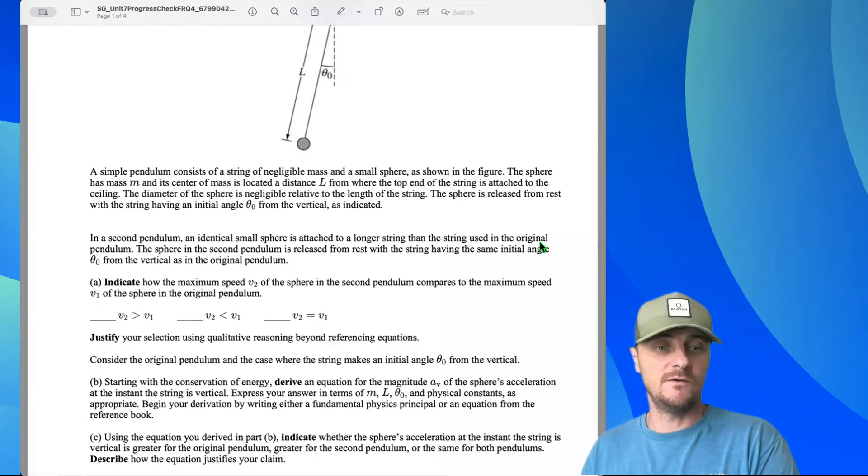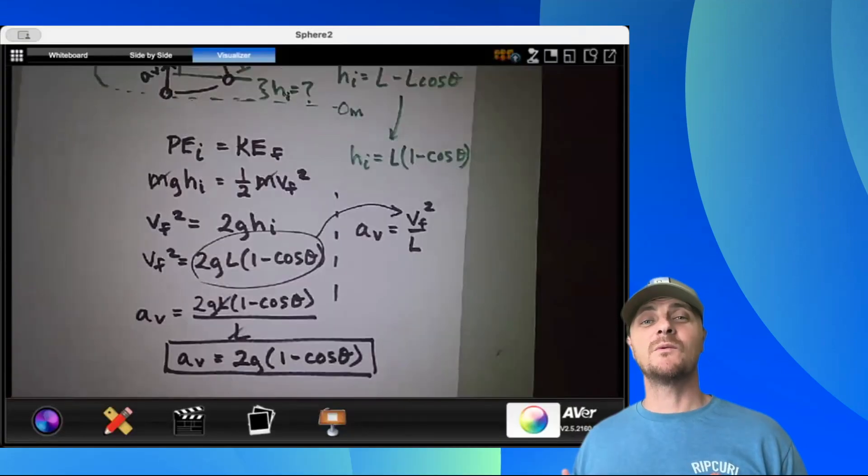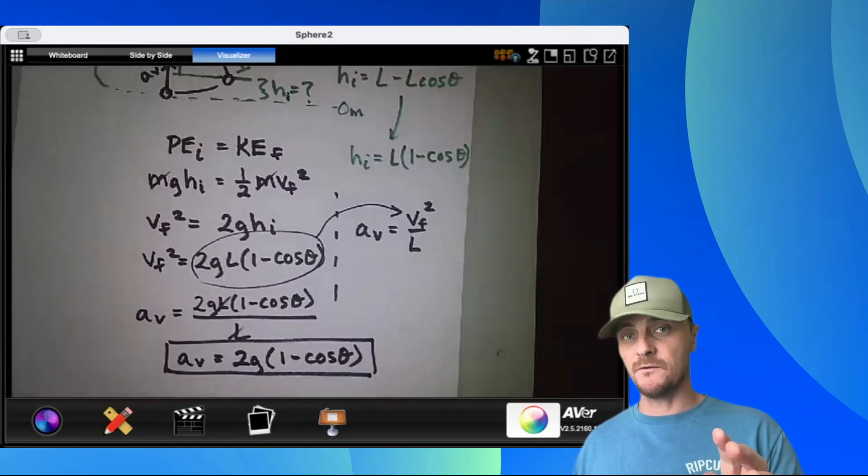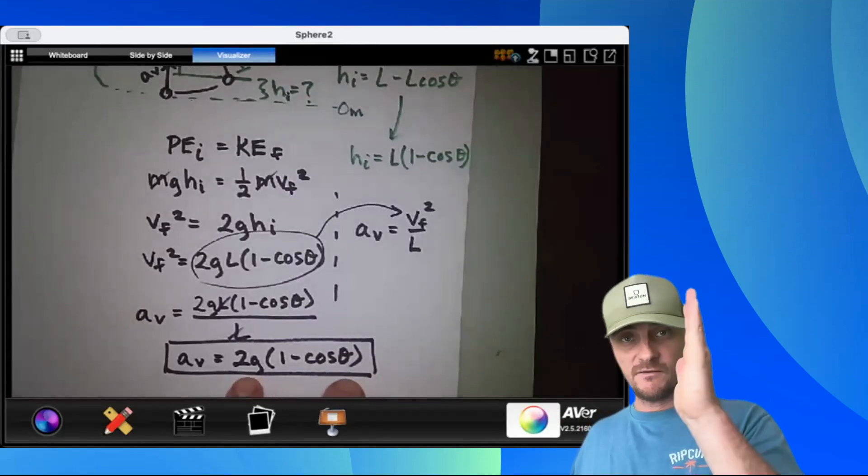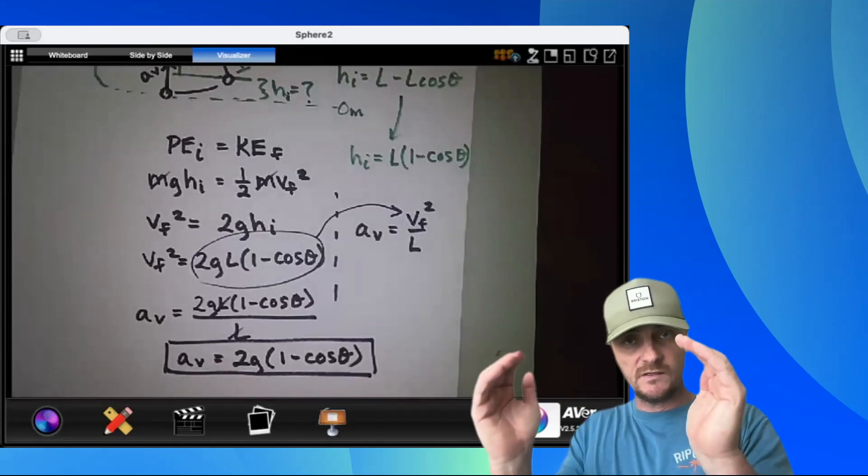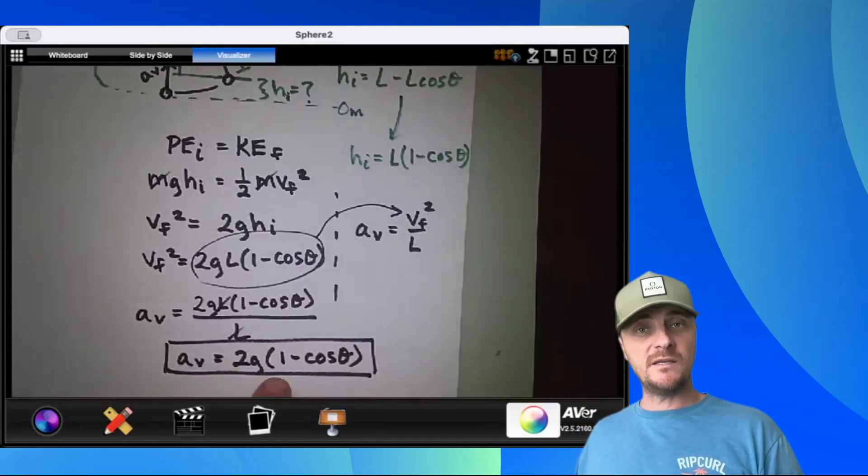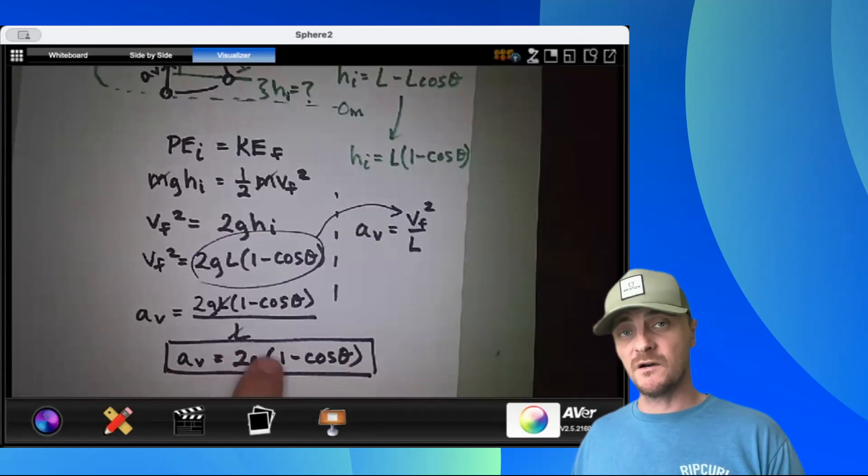Let's go over to part C. Part C: Using the equation you derived in part B, indicate whether the sphere's acceleration at the instant the string is vertical is greater for the original pendulum, greater for the second pendulum, or the same for both pendulums. Describe how the equation justifies your claim. And here's what I would say. The sphere's acceleration is the same for both the short pendulum and the long pendulum, period. Looking at the expression for the final acceleration at the vertical, and then write this equation in parentheses, you can see that the equation is independent of the length of the string. And therefore, since the angle is the same for both situations and everything else is a constant, then the acceleration will be the same for both the short pendulum and the long pendulum, period.